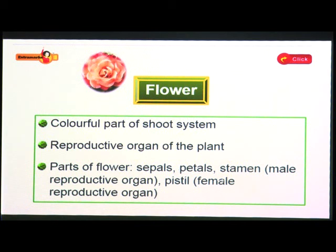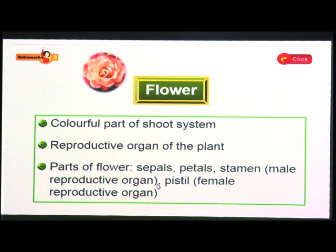The parts of a flower are: sepals, petals, stamen (the male reproductive organ), and pistil (the female reproductive organ). We are going to study each of these in detail.